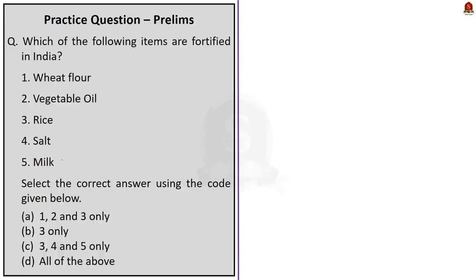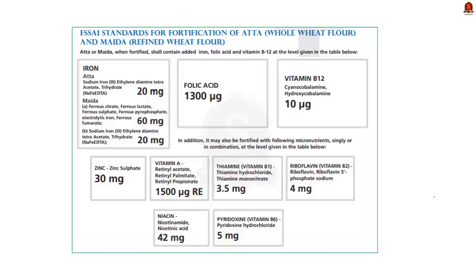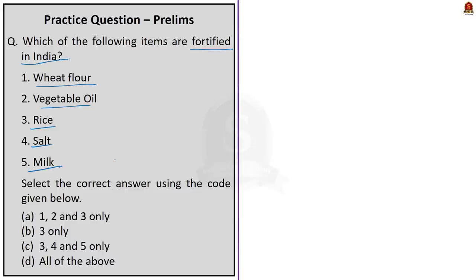Now for the practice questions. Question 1: Which of the following items are fortified in India? Options: wheat flour, vegetable oil, rice, salt, milk. All are fortified in India. Rice is fortified with iron, folic acid, vitamin B12, zinc, vitamin A, vitamin B1, vitamin B2, vitamin B6, etc. Vegetable oil is fortified with vitamin A and vitamin D. Salt is fortified with iodine and iron. Milk is fortified with vitamin A and vitamin D. Wheat flour and maida (refined wheat flour) are both fortified with iron, folic acid, vitamin B12, vitamin A, zinc, etc. So the correct answer is option D — all of the above.